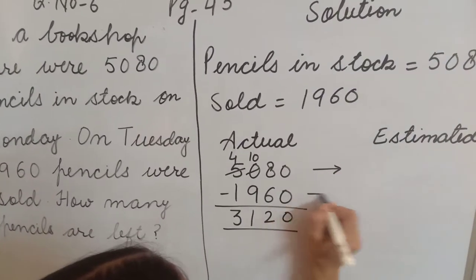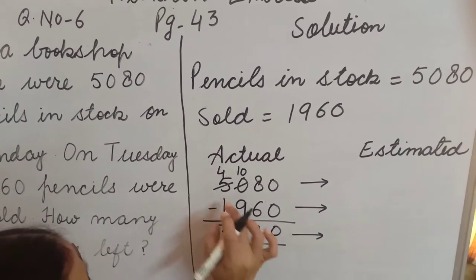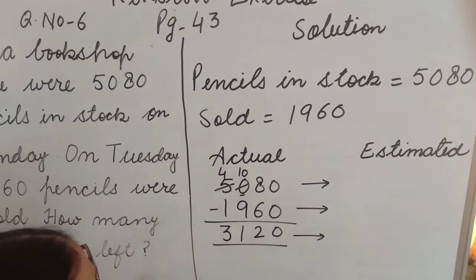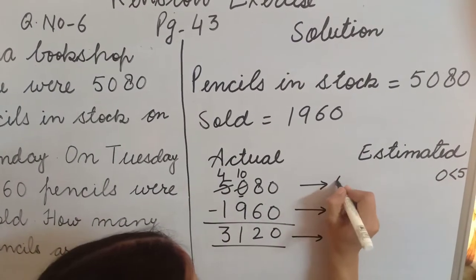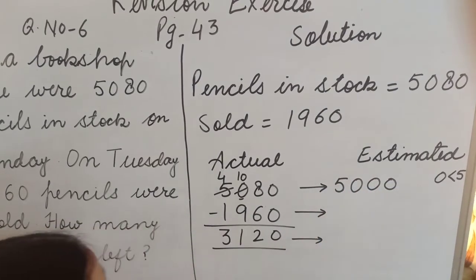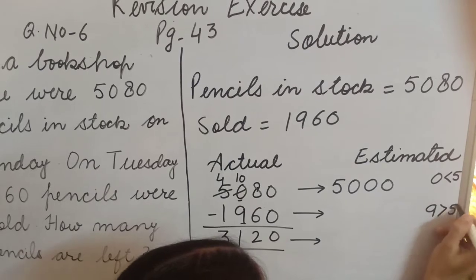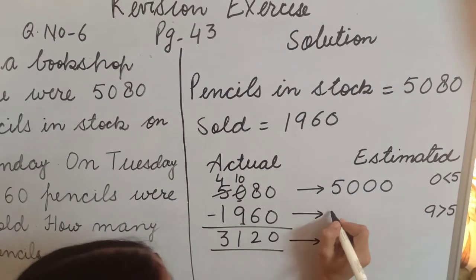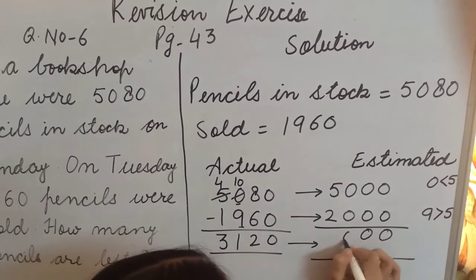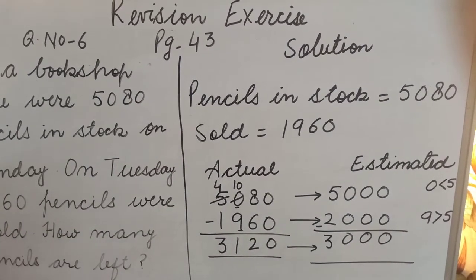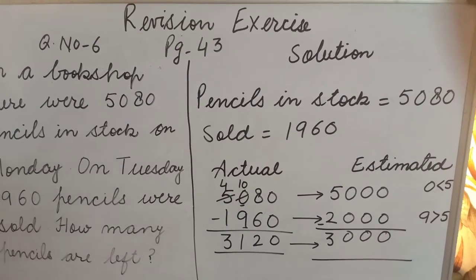Now round off to nearest thousand. When you round off nearest thousand, before thousand place at hundred place is 0. 0 is less than 5, then this 5 will remain same, no change. Then come to this side, down side. Before 1 is 9. 9 is greater than 5, then 1 plus in this 1, it will become 2,000. Now minus: 5,000 minus 2,000 is 3,000. How many pencils are left? Estimated 3,000, and actually how many left? 3,120.